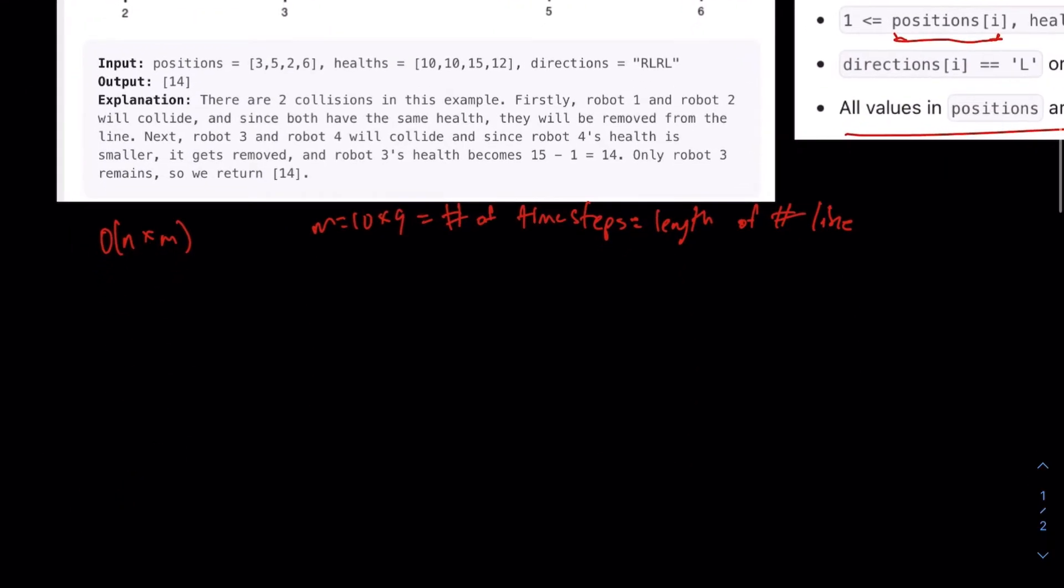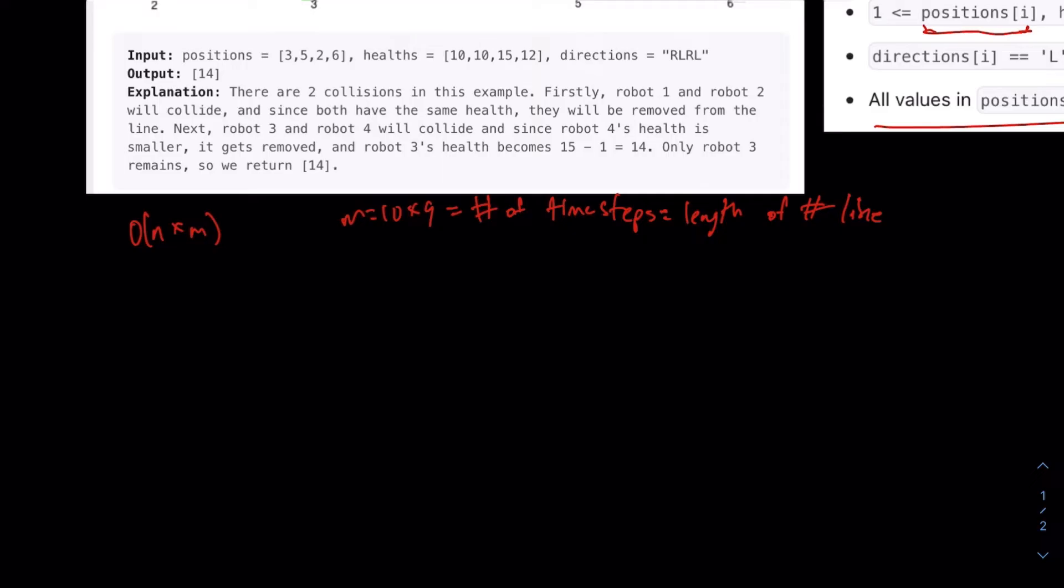Or what are the conditions for robots to collide? So for two robots to collide, two robots can be in four different states. State one, it's LR. So I'm going to arbitrarily say there are two robots. This L, this one represents the direction of the left robot, and this one represents the direction of the right robot. So there are four different states they could be in. LR, LL, RR, and RL.